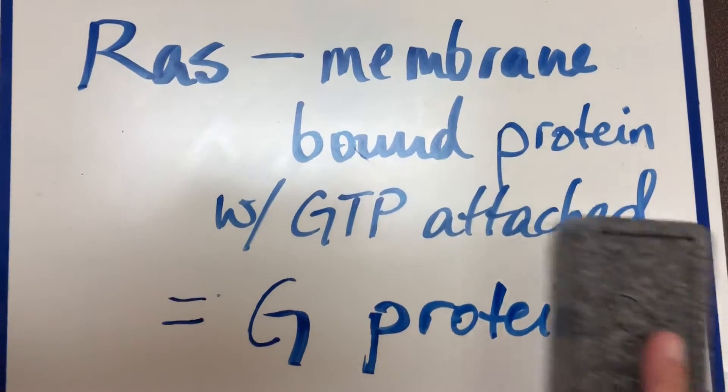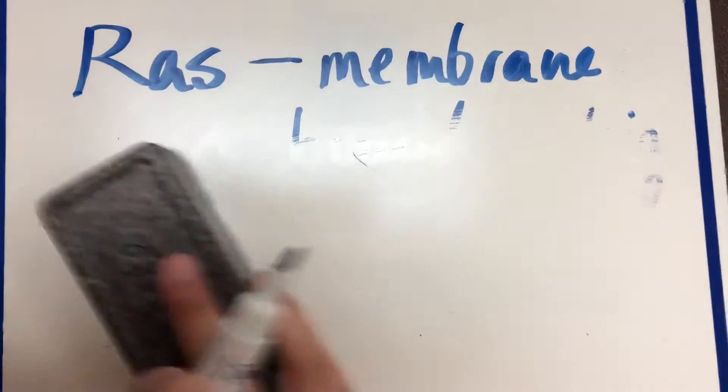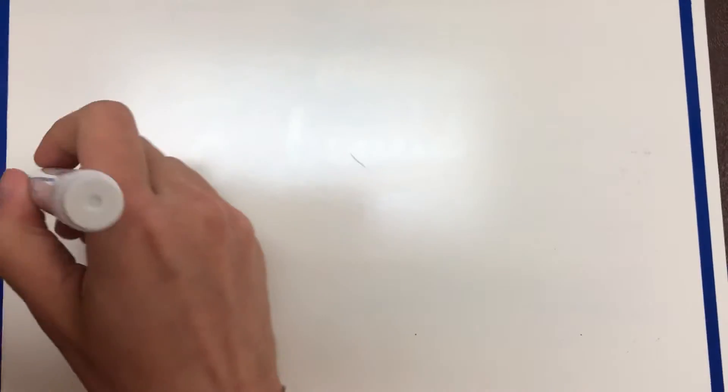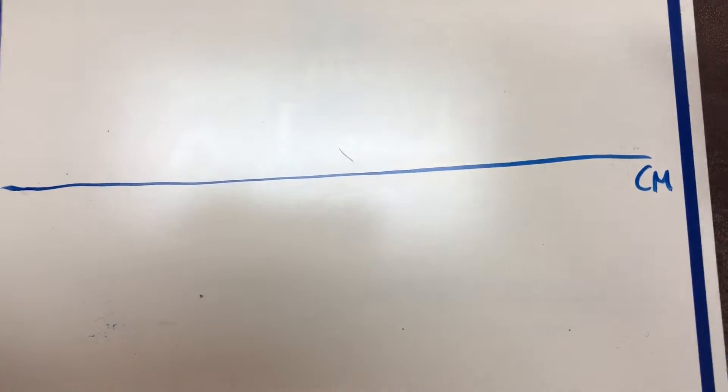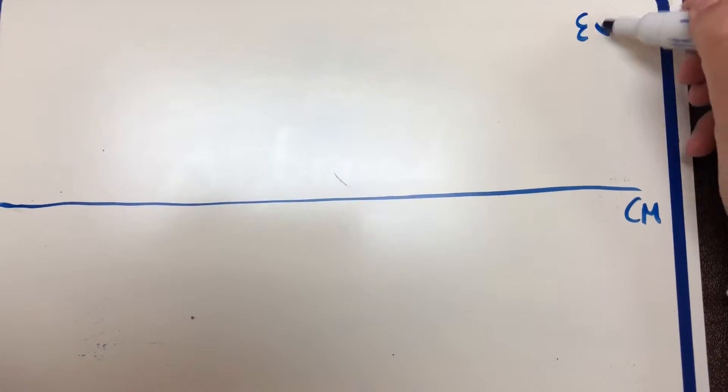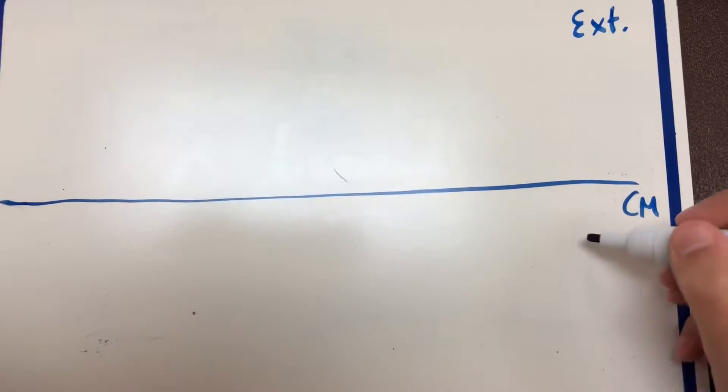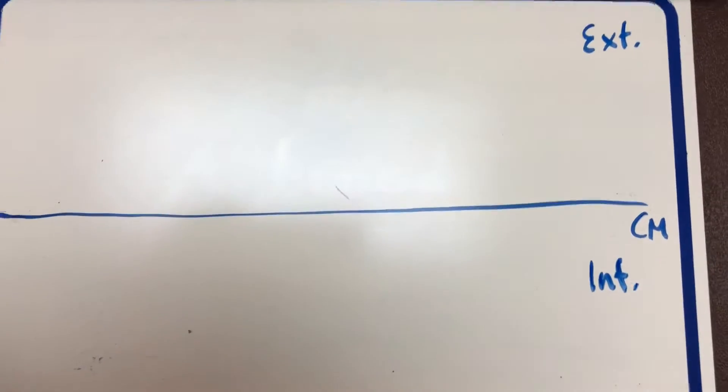Okay, so I'm going to talk about this pathway a little bit now. So I'm going to draw a line here. Think of this as our cell membrane. This is going to be the extracellular part. This is the intracellular part.